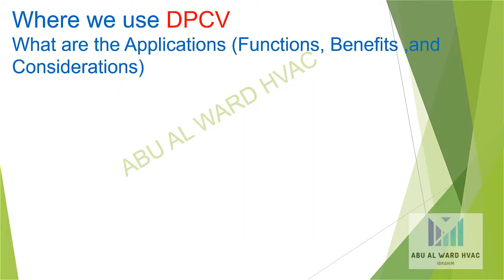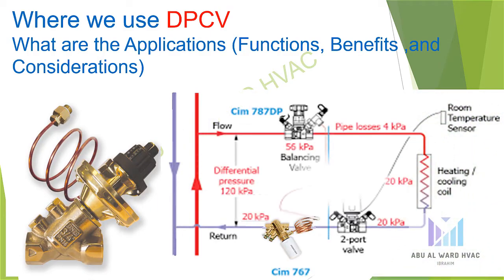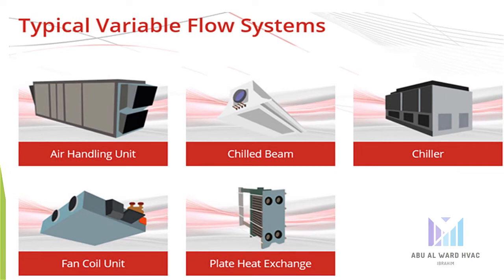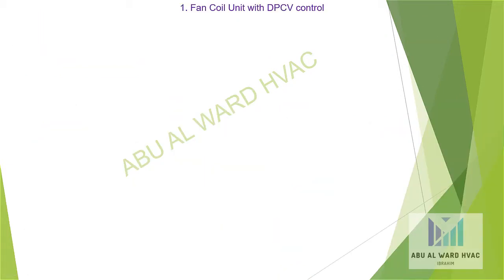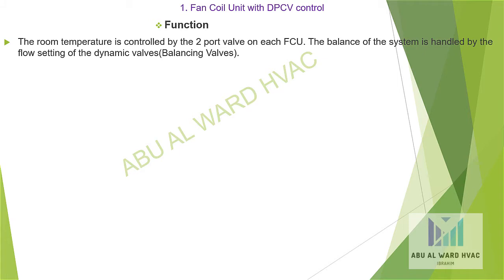Where do we use the DPCV? Applications include air handling units, chilled beams, chillers, fan coil units, and plate heat exchangers. For fan coil unit DPCV control, the function is: room temperature is controlled by a two-port valve on each FCU, and the balance of the system is handled by the flow setting of the dynamic balancing valves.